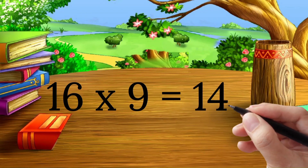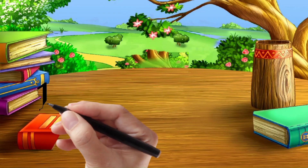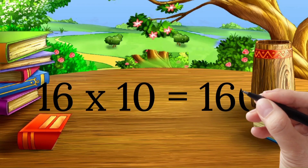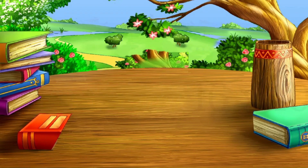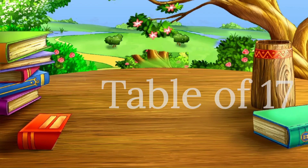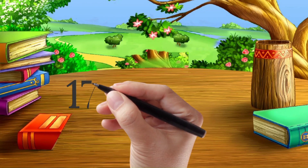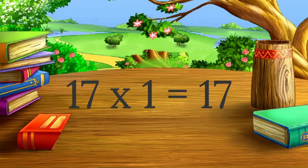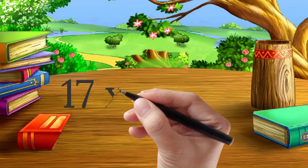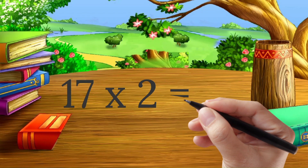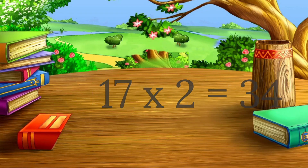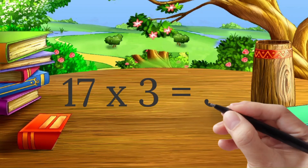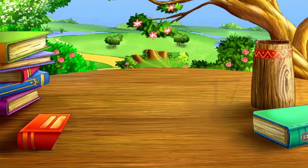Sixteen nine's a one-hundred-fifty-four. Sixteen ten's a one-hundred-sixty. Sixteen seven's a twenty-four. Sixteen three's a thirty-four.